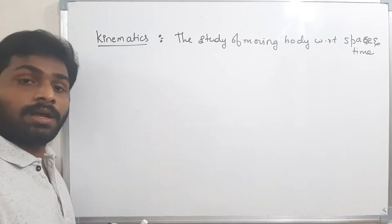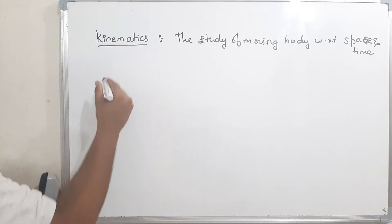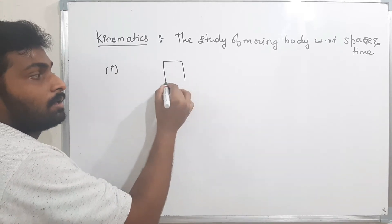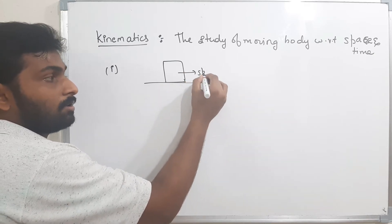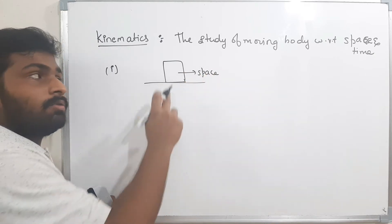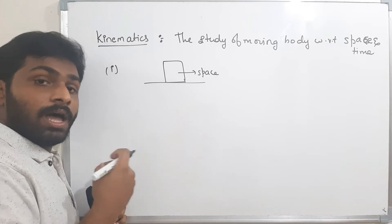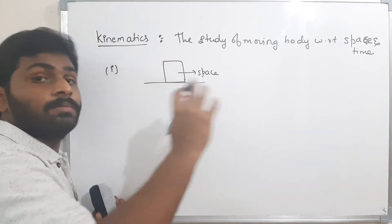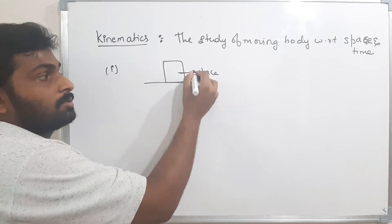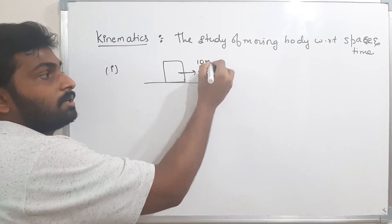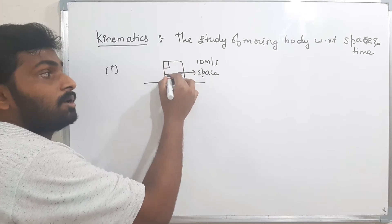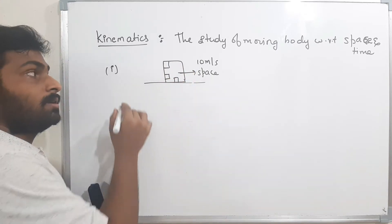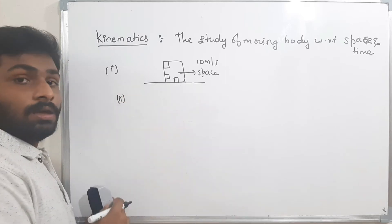We have to assume a few things when studying kinematics. First: whenever the body is moving in space, I have to assume that each part of the body moves with the same motion. That means if the body is moving at 10 meters per second, I have to assume that each part of the body is also moving at 10 meters per second. That is the first assumption.